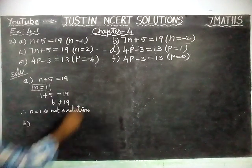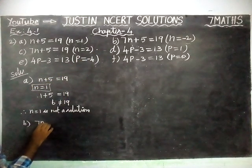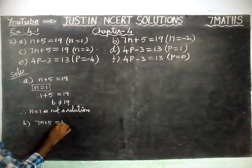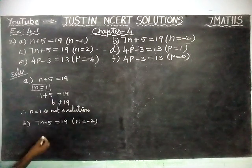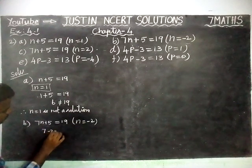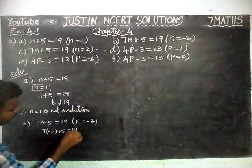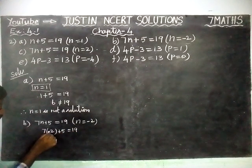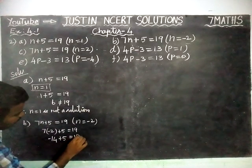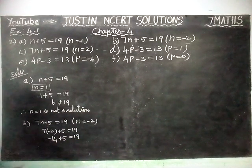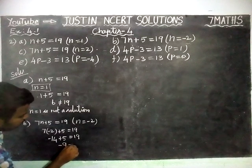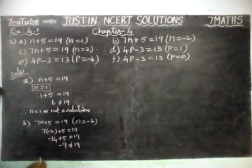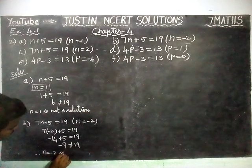Next, option B: 7N plus 5 is equal to 19, where N is equal to minus 2. Substituting: 7 into minus 2 plus 5 is equal to 19. 7 times 2 is 14, and plus into minus gives minus, so minus 14 plus 5. The signs are different, so we find the difference: 14 minus 5 is 9. The greatest number is 14 which is negative, so the result is minus 9, which is not equal to 19. Therefore, N equal to minus 2 is not a solution.